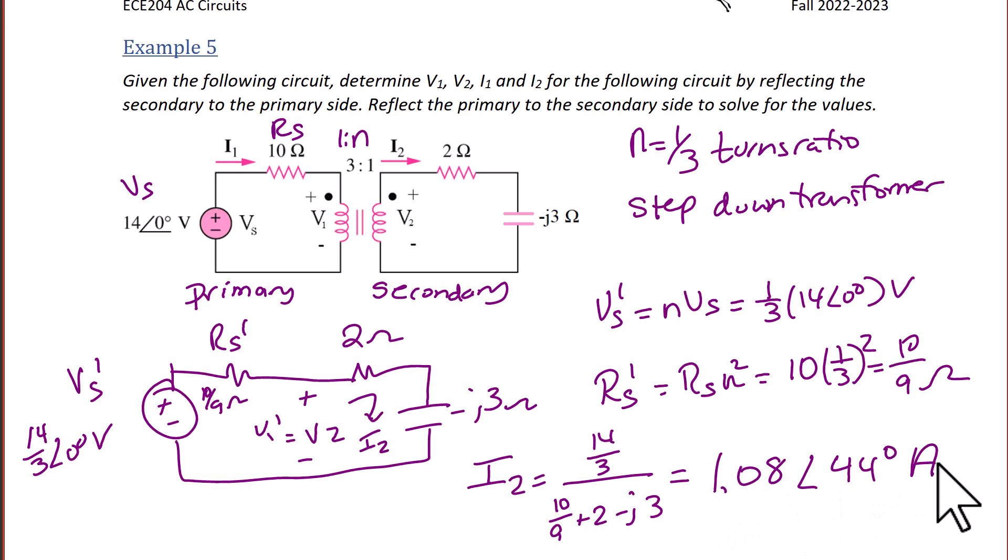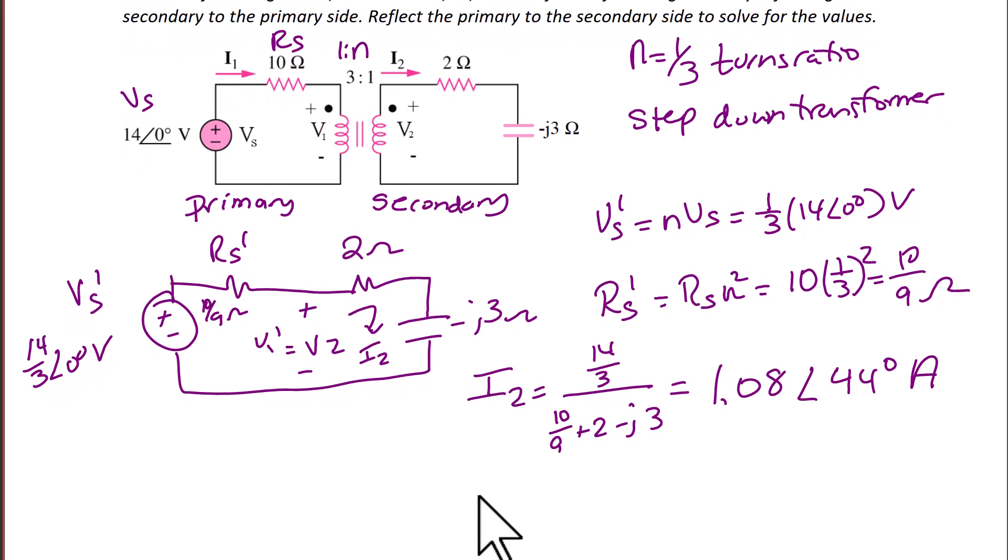Next we're going to find V2. V2 is going to equal 2 minus J3 times I2. So V2 equals 3.89 with an angle of negative 12 degrees, in volts.